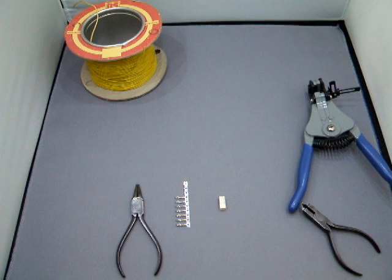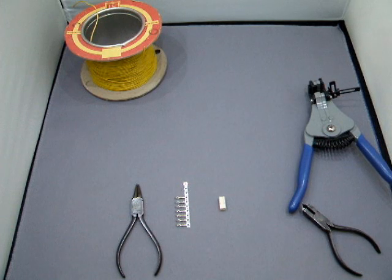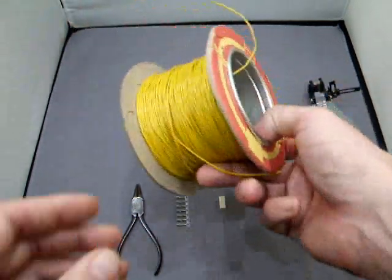This is a demonstration of how to put on a crimp connector when you haven't got a proper crimping tool. The first thing to do is to cut your wire to the right length.